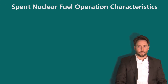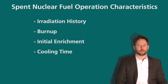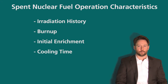Now let's talk about spent nuclear fuel operational characteristics. What we will go through is the irradiation history, spent fuel burn-up, initial enrichment, and cooling time — all of which factor into the operational characteristics of a spent nuclear fuel assembly.